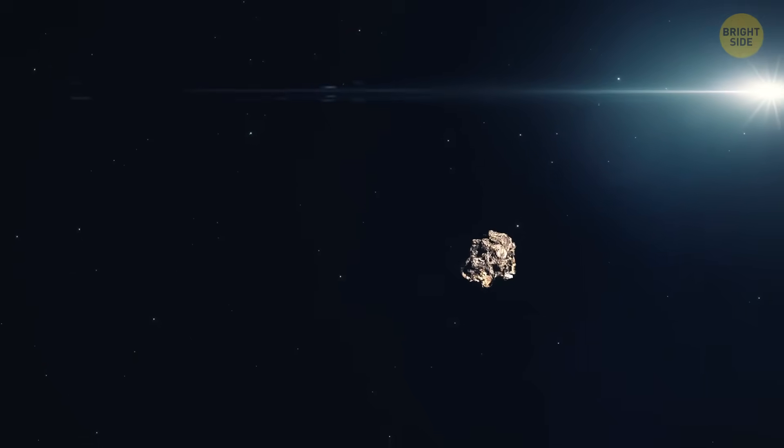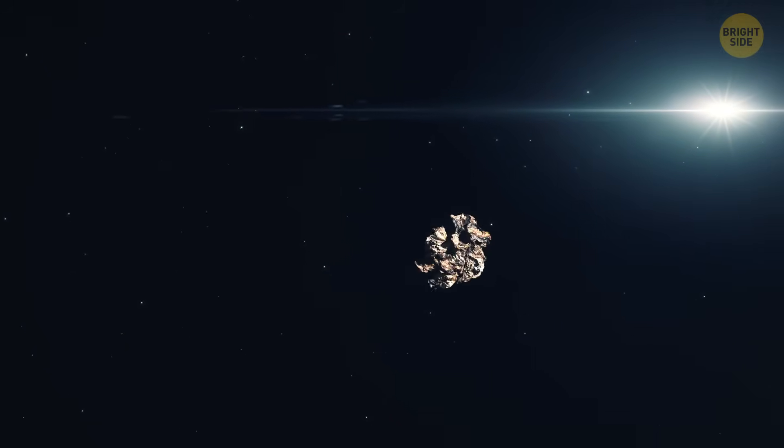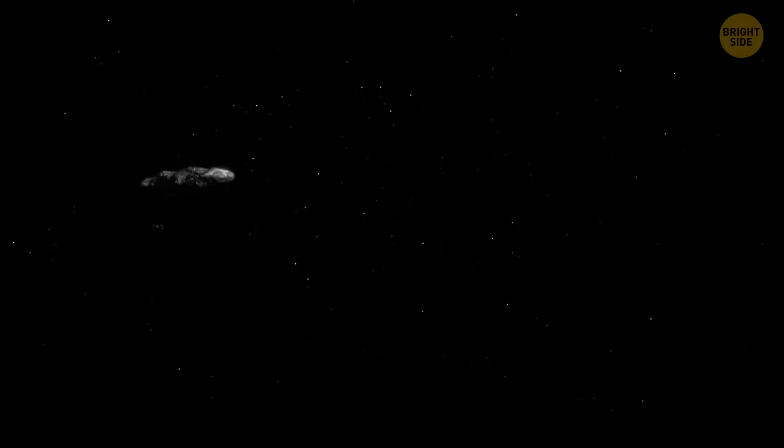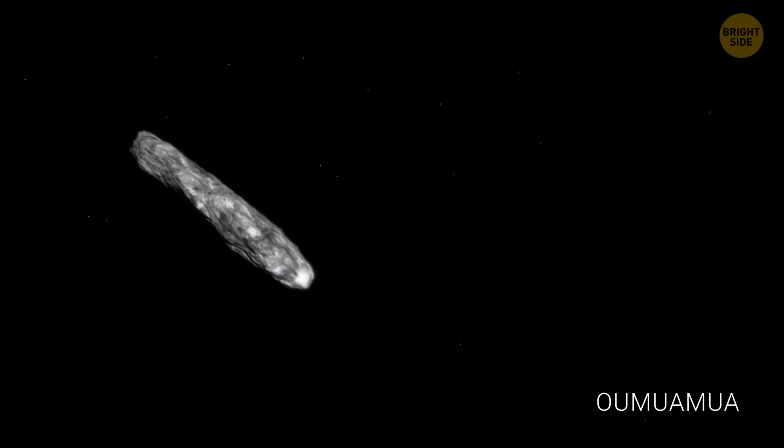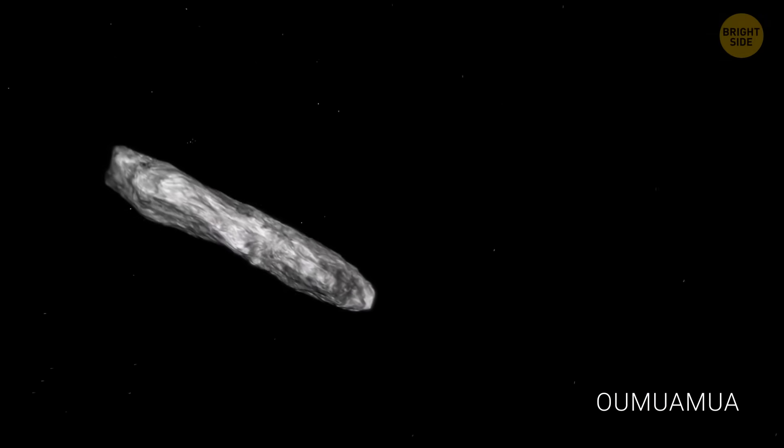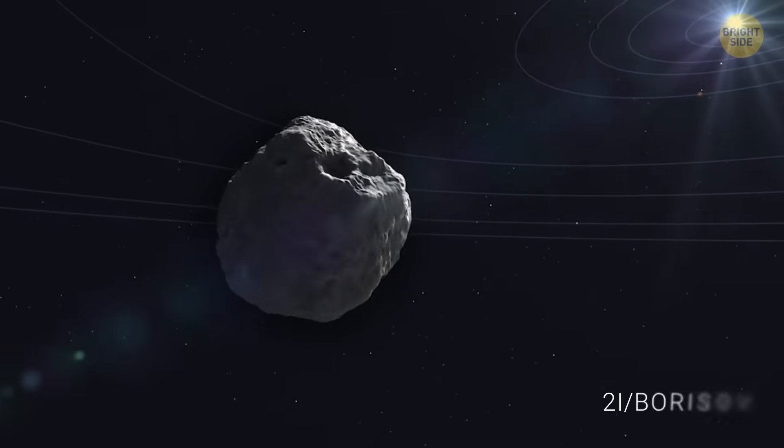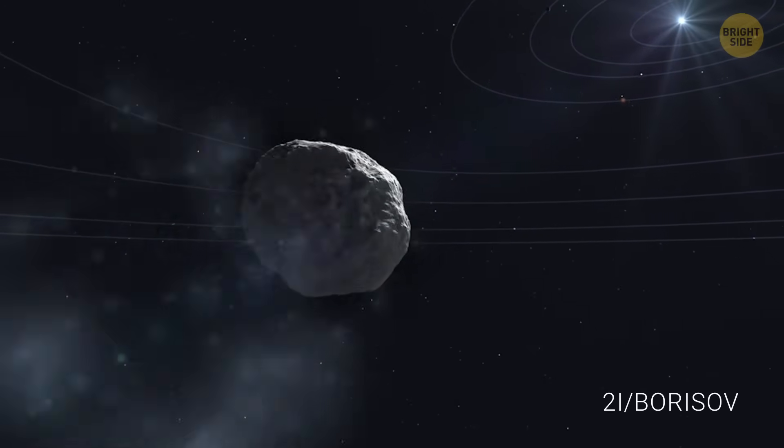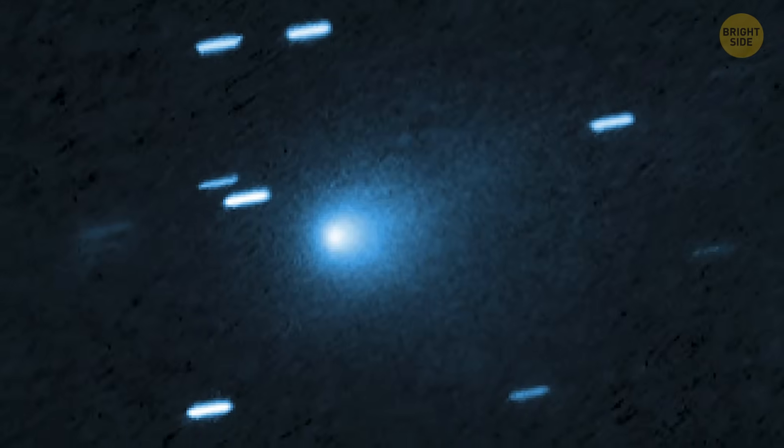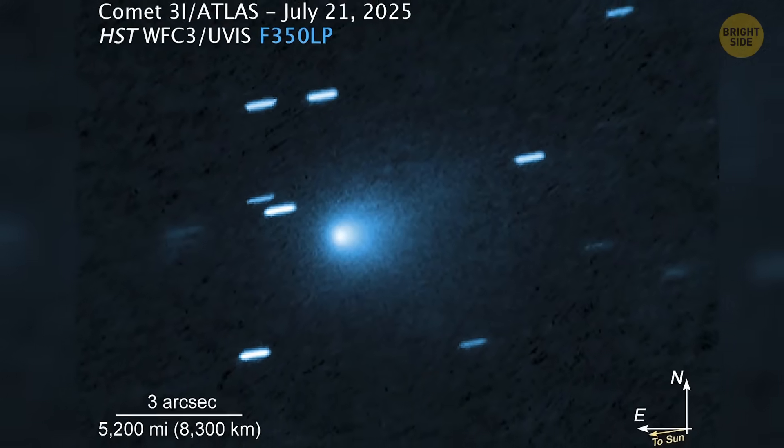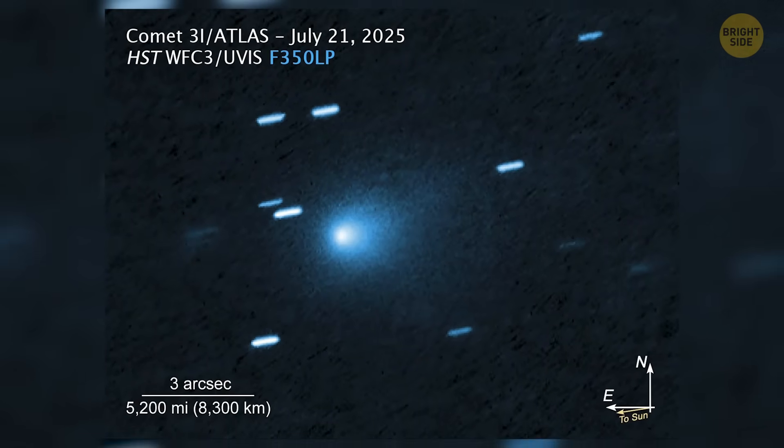Shortly after, NASA confirmed that the object wasn't from our solar system at all. It's an interstellar object, only the third ever discovered. The first one was Oumuamua in 2017, which looked long and flat and didn't behave like a normal rock. The second was comet 2I Borisov in 2019. Now we have 3I Atlas, and it is enormous compared with the other two.